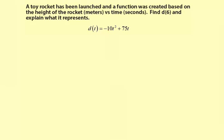So here's d of t equals negative 10t squared plus 75t. And so t, the time, is the input, and the height of the rocket, which is represented by d in this case, is in meters.